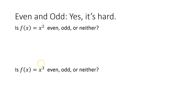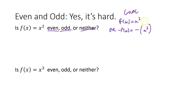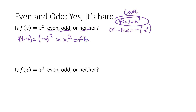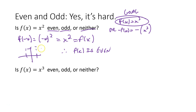Let's prove these analytically by plugging in negative x. If f(x) = x², our goal is to get either x² (the original function) or negative x² (the opposite). So we compute f(-x) = (-x)² = x², because when you square a negative number it becomes positive. That is f(x). So I plugged in negative x and got f(x) out — therefore, f(x) is even.